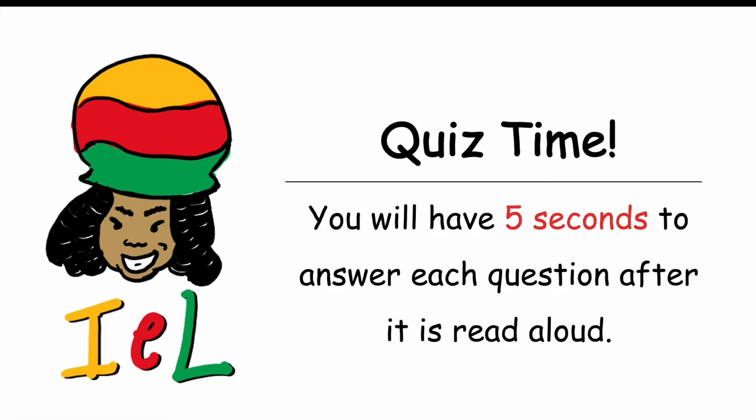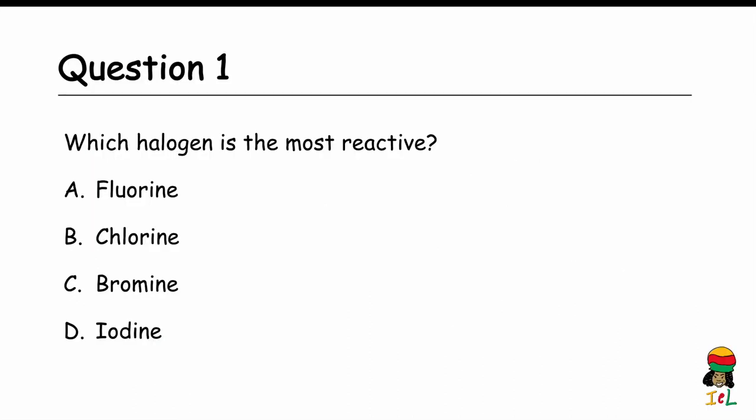It's quiz time. You have 5 seconds to answer each question after it is read aloud. Question 1: Which halogen is the most reactive? A. Fluorine, B. Chlorine, C. Bromine, D. Iodine. The answer is A — Fluorine.